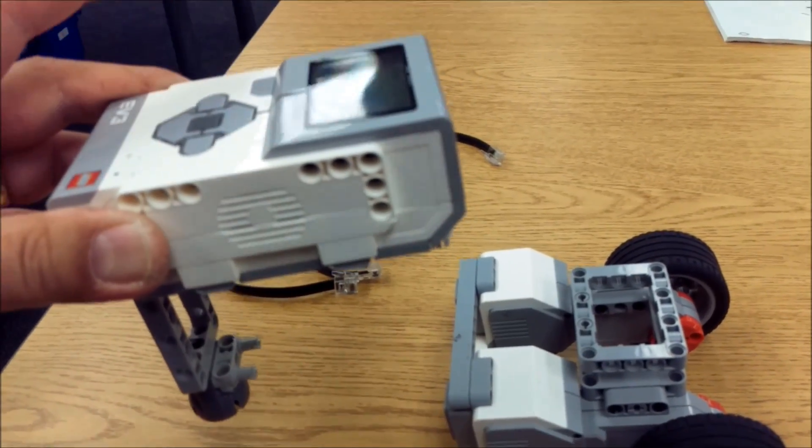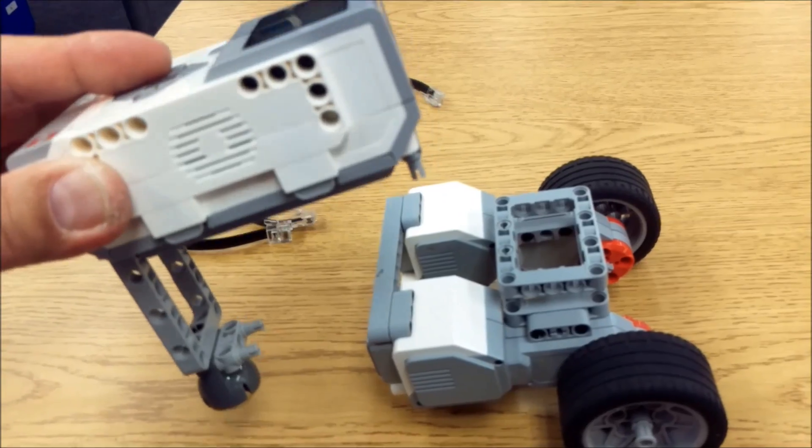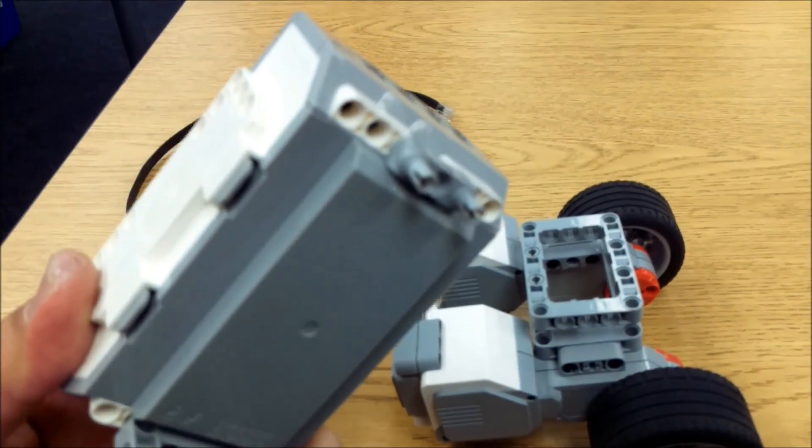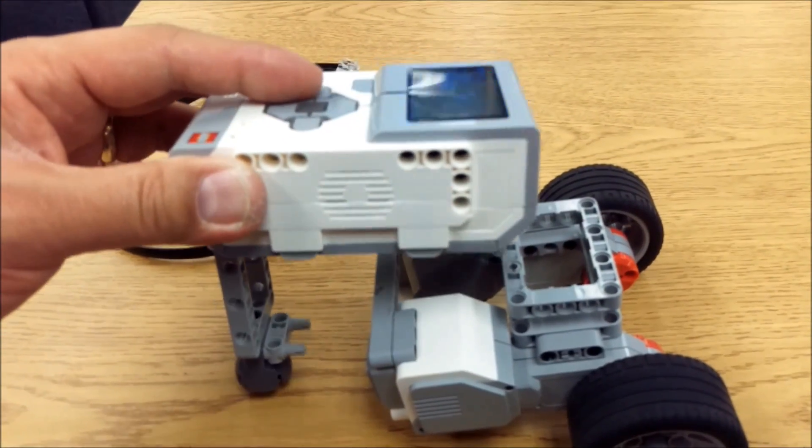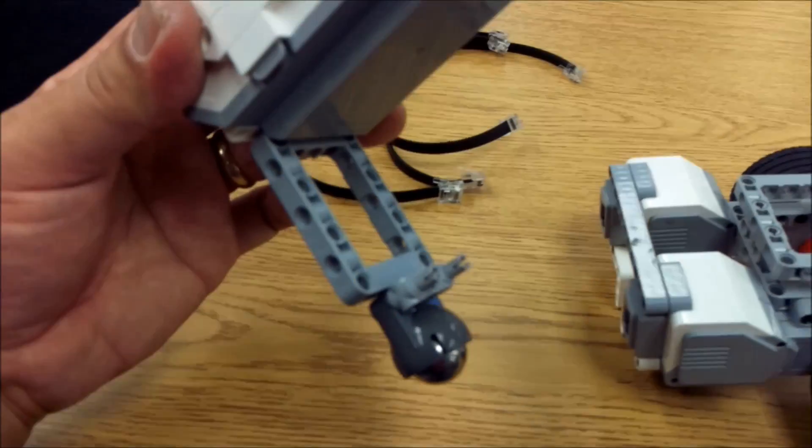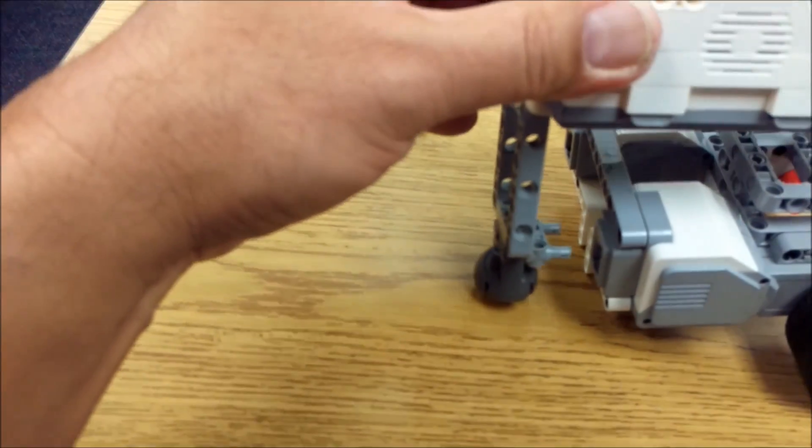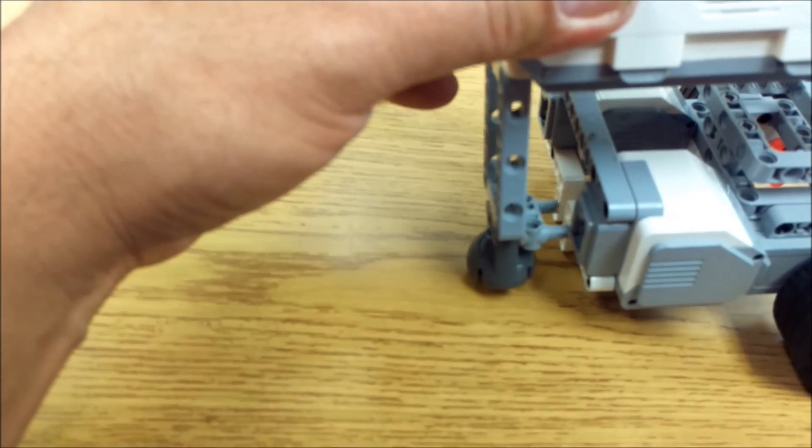So now it's time to connect the brick here now to the motors. So this H piece right here will connect down here to this gray square. This H piece right here above the ball and caster will connect into the two L pieces.